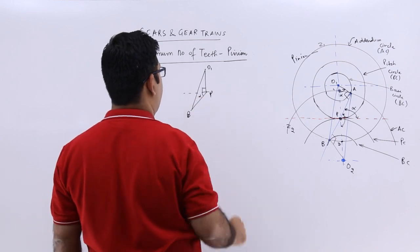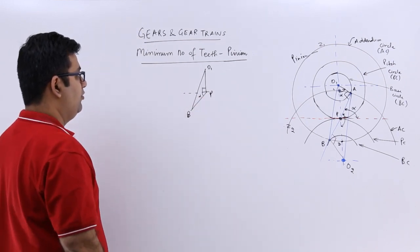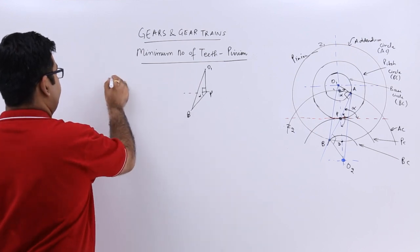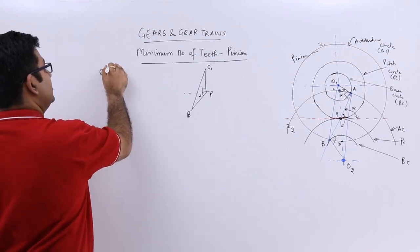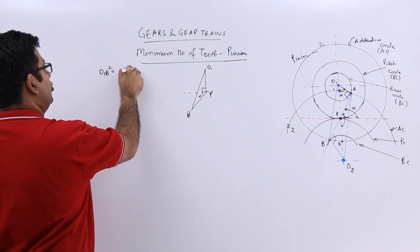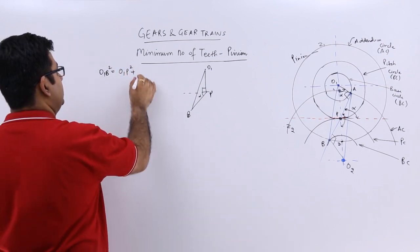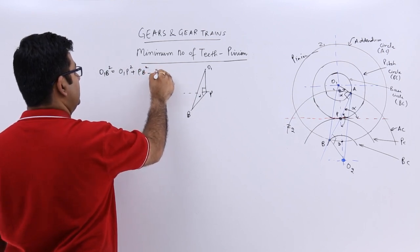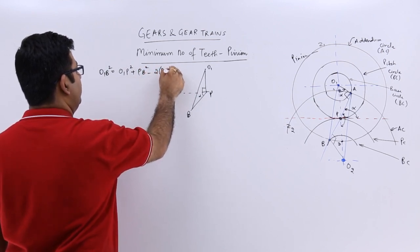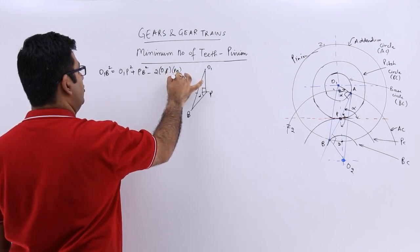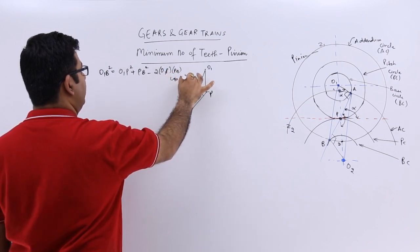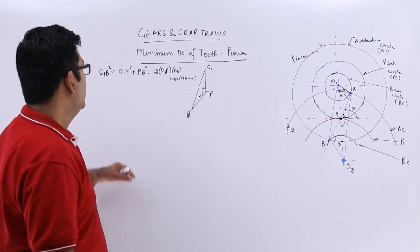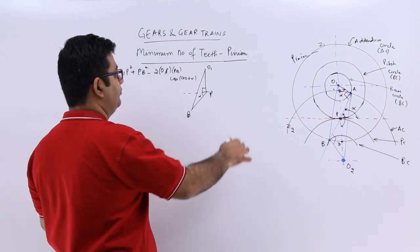This is alpha and this is 90 degrees. We find out O₁B² which is O₁P² plus PB² minus 2 times O₁P times PB times cos(90° + α).